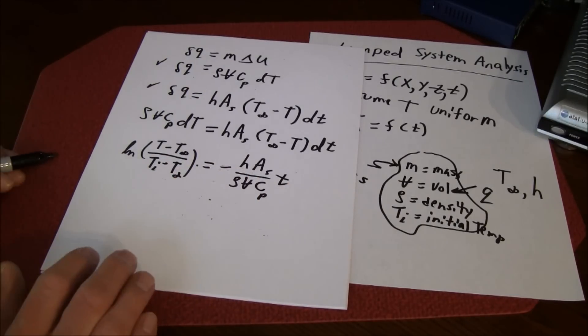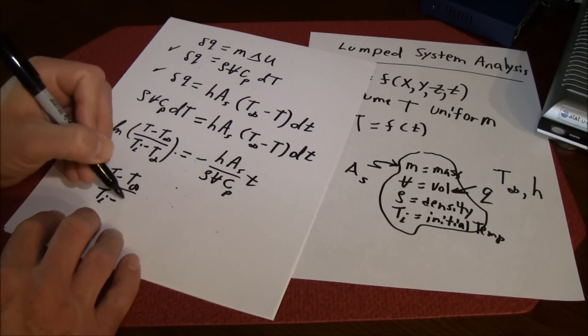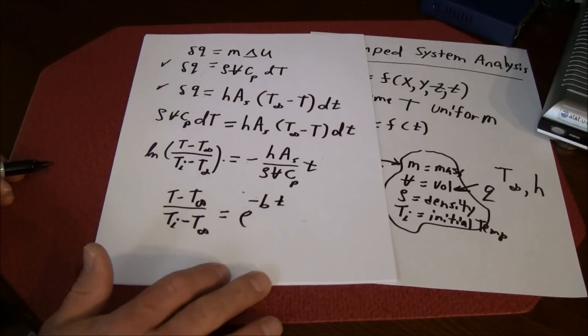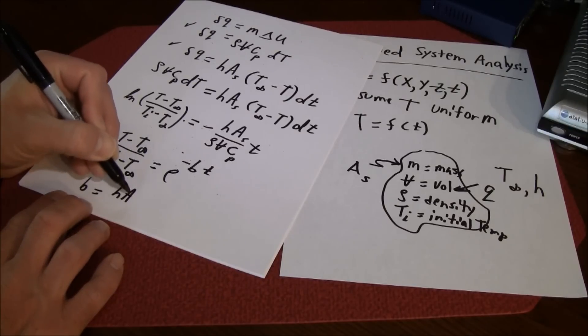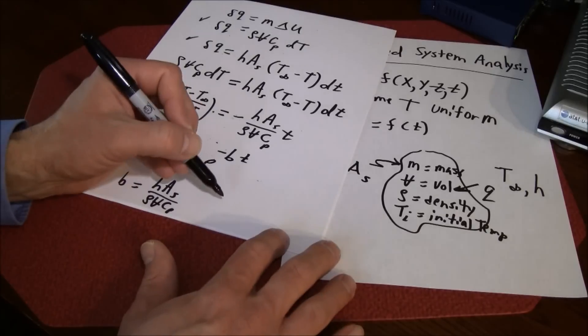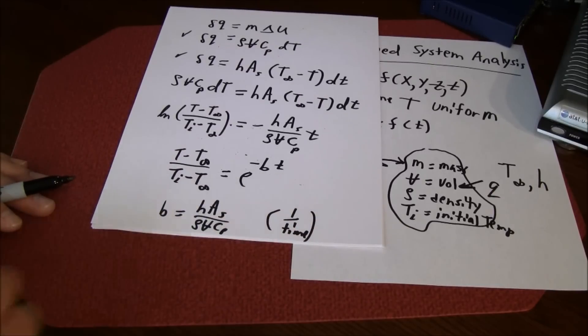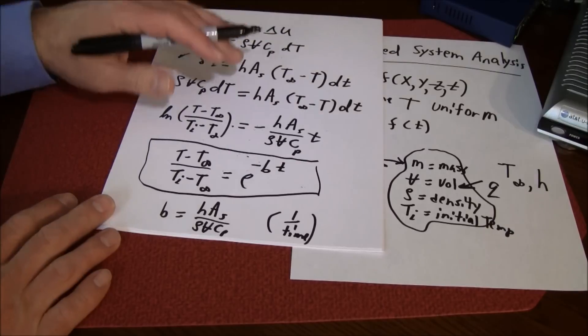We can simplify this further by taking the exponential of both sides and we would get T minus T infinity divided by T initial minus T infinity equals e to the minus b little t, where b is equal to h times the surface area divided by rho V c sub p. This has units of one over time, so if you took b to the negative one, that's referred to as the time constant.